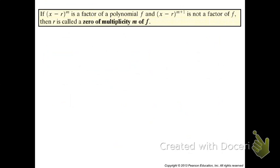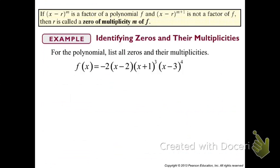Now we're going to crank it up a notch and talk about the multiplicity of a factor. The definition says: if x minus r to the mth power is a factor of a polynomial f, and x minus r to the m plus one is not a factor, then r is called a zero of multiplicity m of f. That's kind of confusing, so let's look at what it actually means.